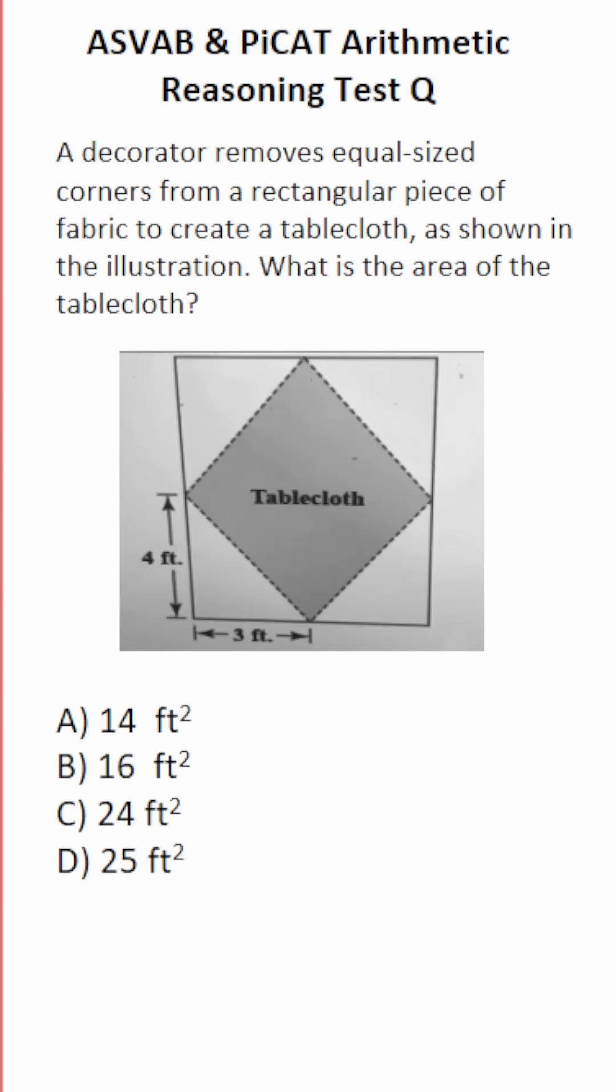So we need to figure out what type of shape we have for a tablecloth. If it's a square, its two diagonals are going to be equal. That is, D1 is going to be equal to D2. If the diagonals are not equal, we have either a diamond or a rhombus.